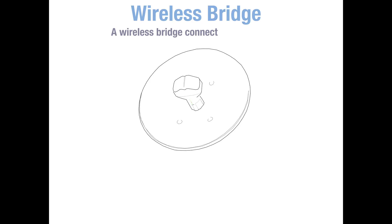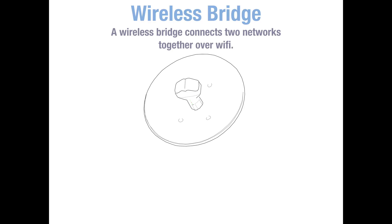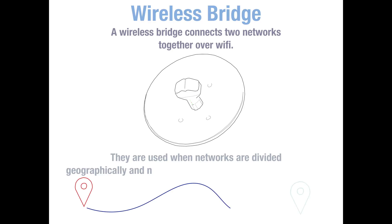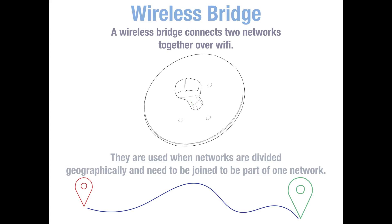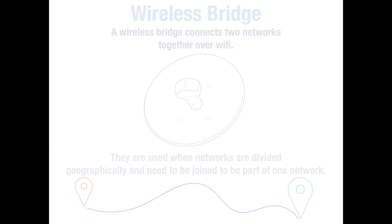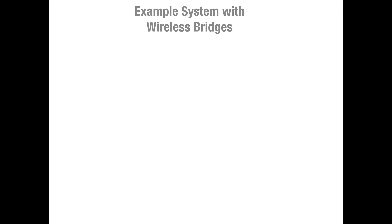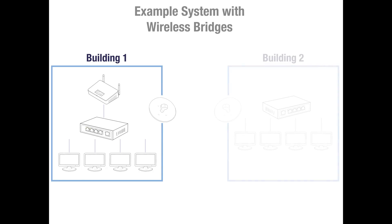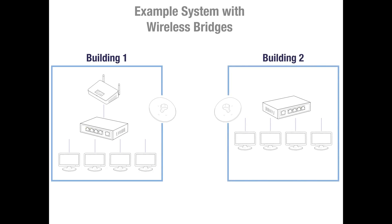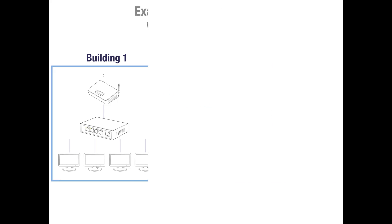Next, we will take a look at wireless bridges. A wireless bridge, sold in pairs, is designed to connect two networks together over Wi-Fi. They are most commonly used when networks are divided geographically and need to be joined to be part of one single network. For example, two offices in different buildings may use wireless bridges. In building 1 is the main router with a switch and a collection of computers, and also the first wireless bridge. In building 2 is the second wireless bridge along with a second switch connected to more computers. The networks in these buildings are now combined to be part of one single network.